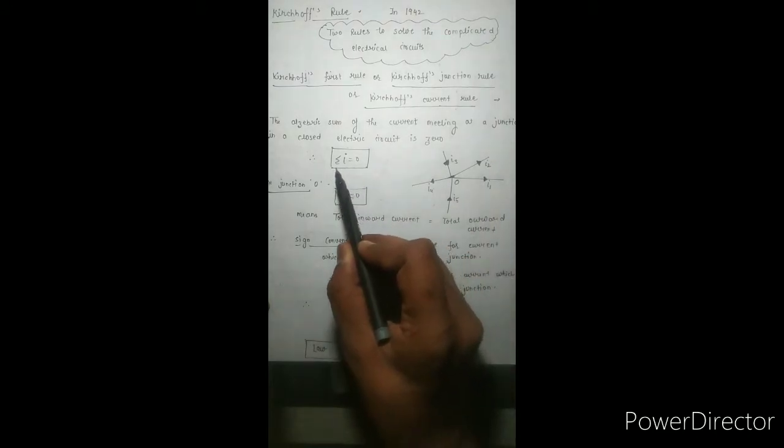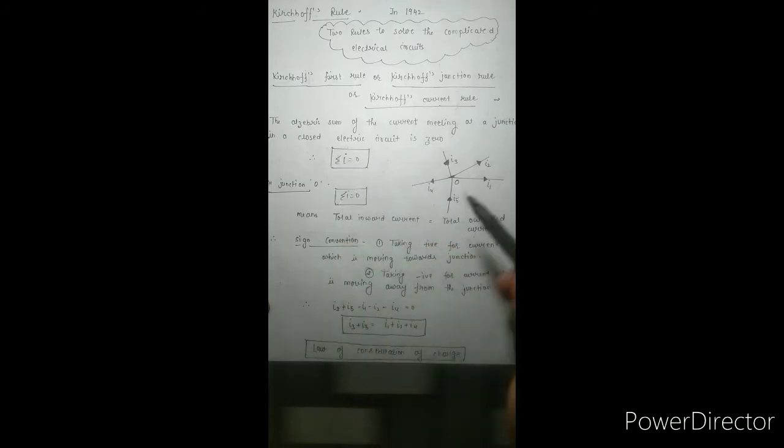Summation of I is equal to zero — the total current at a junction is zero. A junction is a point where wires meet. As shown in the diagram, point O is the junction where five wires are meeting. This rule tells us that at any junction we don't create current, nor is the current destroyed.